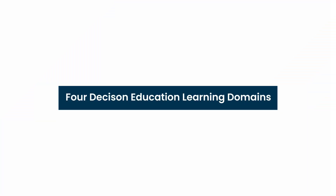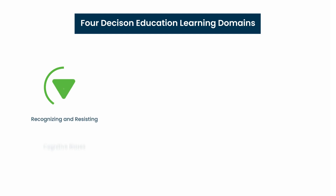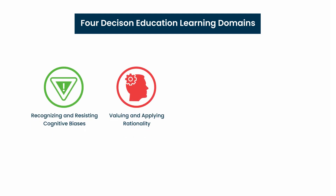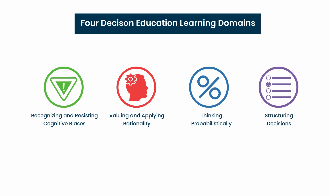These standards, like our overall framework, are organized by four learning domains: recognizing and resisting cognitive biases, valuing and applying rationality, thinking probabilistically, and structuring decisions. Although each of these domains relates differently to aspects of decision making, our hope is that when students are making decisions or forming judgments, they are integrating skills and content from across all four.